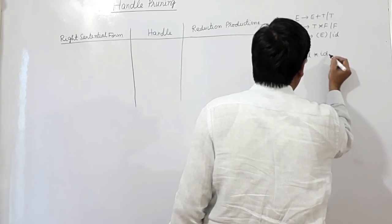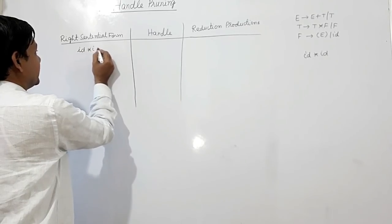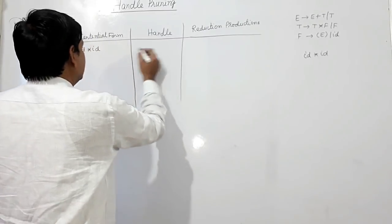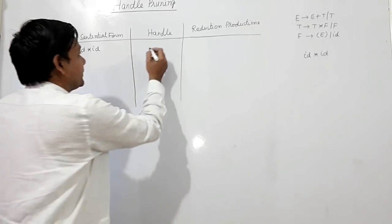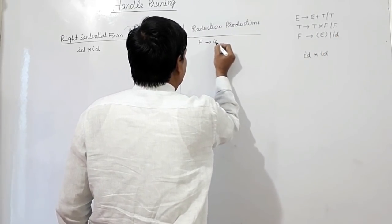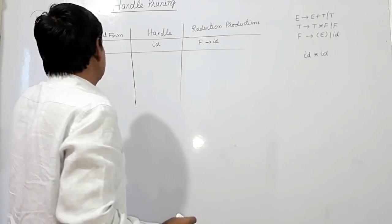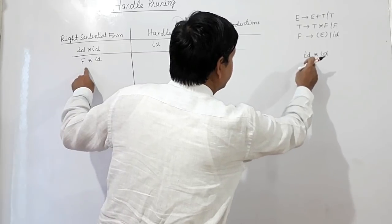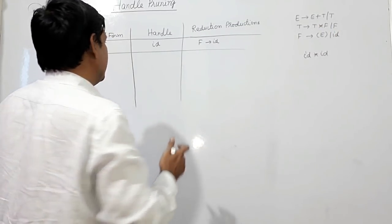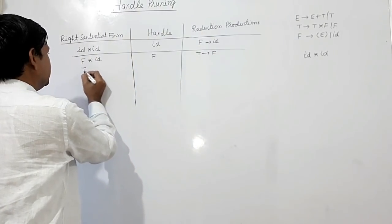We wanted to check handles for id star id. So in the right sentential form we shall have id star id. Scanning from left to right, this id can be reduced by F. So id will be the handle, and the reduction used is: F produces id. So I can write F star id. Now this F can also be reduced by T, because we need to reach T star F. So F will be the handle here, and F can be reduced to T, giving T star id.